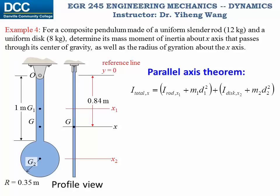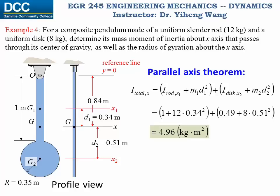d1 is the perpendicular distance between the x1 axis and the x-axis, and d2 is the perpendicular distance between the x2 axis and the x-axis. Substituting all numbers into the parallel axis theorem and adding the two components, we get the total mass moment of inertia of this pendulum about the x-axis passing through its mass center G. We also calculate the radius of gyration about this same axis, and this completes the problem.